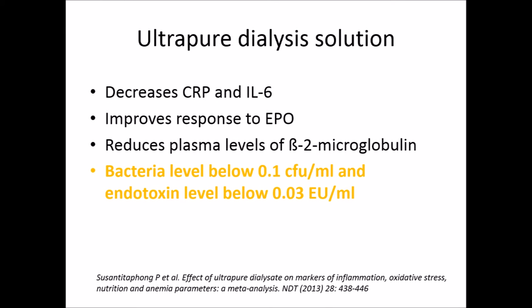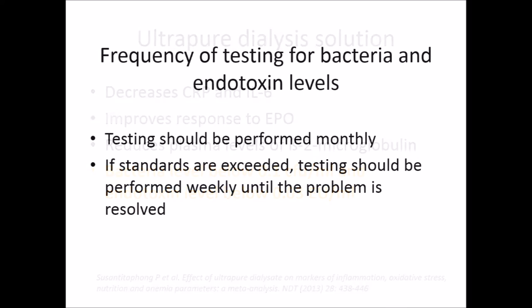Coming to ultrapure dialysis solution — we all know the positives: it decreases CRP and other inflammatory mediators, improves response to erythropoietin, and reduces plasma levels of beta-2 microglobulin, among other things. For preparing ultrapure dialysis, the bacterial level should be below 0.1 colony forming units per ml and the endotoxin level below 0.03 endotoxin units per ml. Chemical testing should be done at least once every six months; bacteria and endotoxins should be tested monthly. If standards are exceeded, testing should be performed weekly until the problem is resolved.